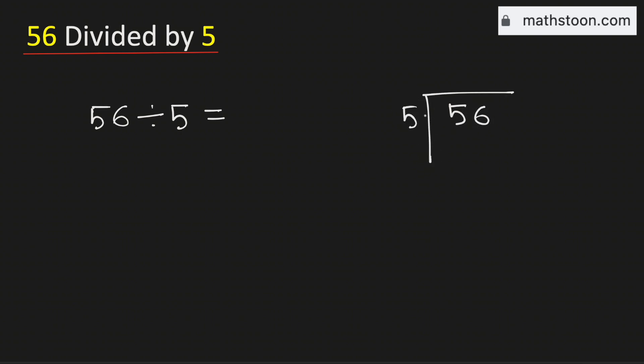Consider the first digit 5. We know that 5 times 1 is 5. Subtract, we get 0.